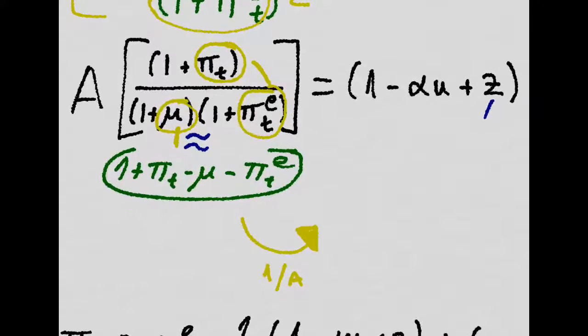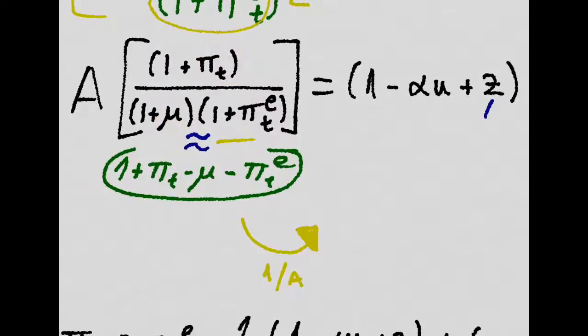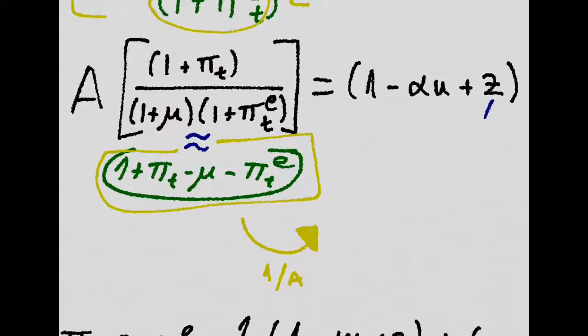So if these three elements are low, there are numbers like 0.0-something, then this will be a good approximation of this expression right here.